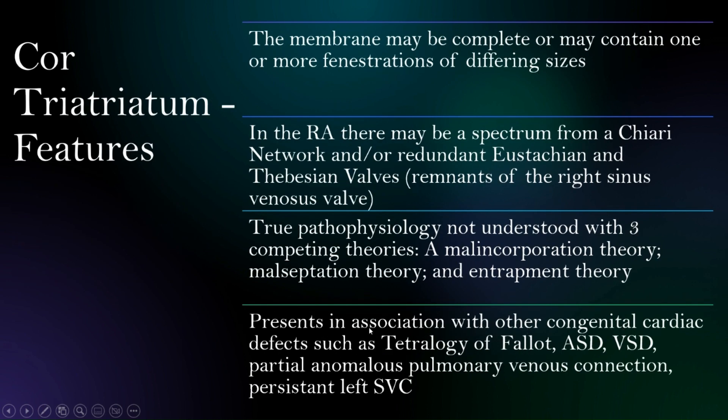The membrane may be complete or may contain one or more fenestrations of differing sizes. When we consider the right atrium, sometimes we'll see something such as a Chiari network, which is essentially a multiply fenestrated remnant. Similarly, redundant eustachian tubes and thebesian valves can also sometimes be seen, which are not necessarily cor triatriatum, but may be within the spectrum of abnormalities with that relative appearance.